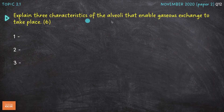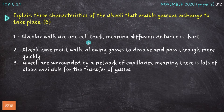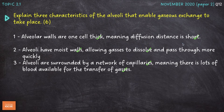Next question: explain three characteristics of the alveoli that enable gaseous exchange to take place, worth six marks. We need to name three characteristics and then explain how they enable gaseous exchange. The three I've named are: the alveolar walls are one cell thick; the alveoli have moist walls; and the alveoli are surrounded by a network of capillaries — three marks already. The one-cell-thick walls mean the diffusion distance is short, so oxygen and carbon dioxide only have a very short distance to diffuse. The moist walls allow gases to dissolve and pass through more quickly. The capillary network means there's lots of blood available for gas transfer.